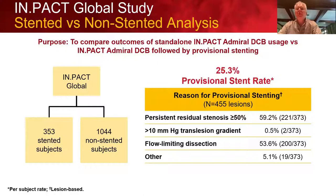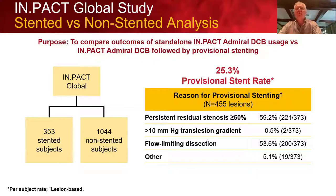Looking at the reasons for provisional stenting in those 455 lesions from 353 patients: about 60% had residual stenosis greater than 50%, a small percentage had a greater than 10-millimeter trans-lesion pressure gradient, flow-limiting dissection occurred in about 54%, and some cases were stented for other investigator-determined reasons.